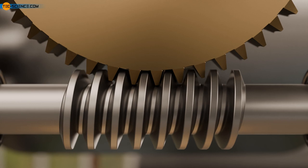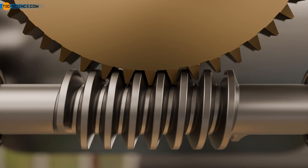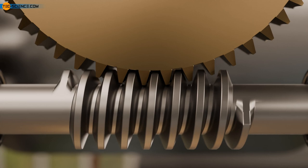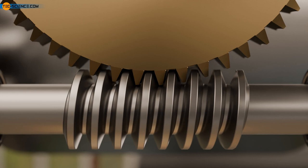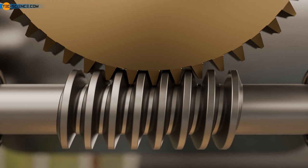In worm drives, power is transmitted almost exclusively by the sliding of the flanks, like a screw and a thread. Worms are therefore a special case of so-called screw gears. However, unlike screw gears, which produce a punctiform flank contact, worms produce a linear flank contact. This has the advantage of transmitting more power at higher transmission ratios.